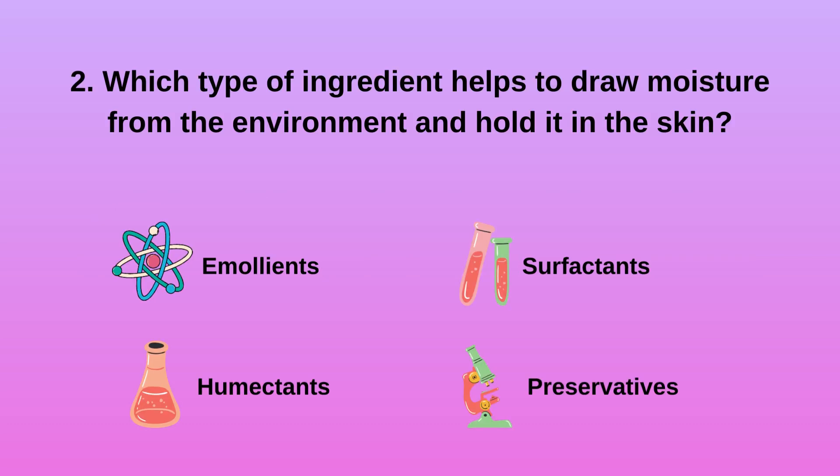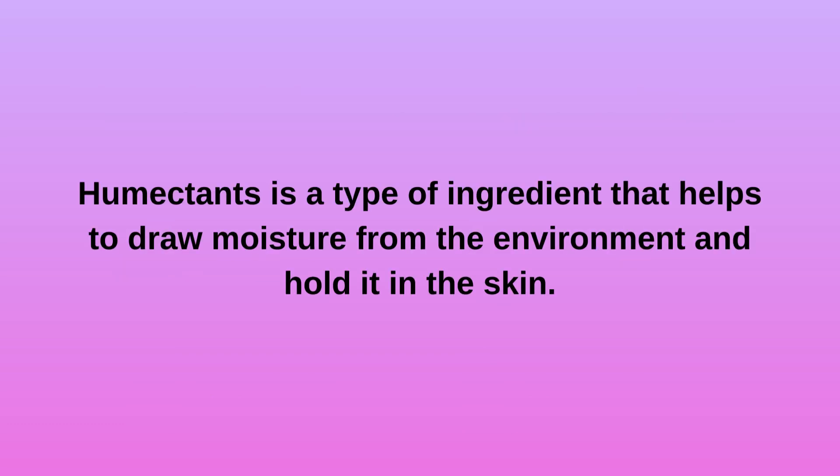2. Which type of ingredient helps to draw moisture from the environment and hold it in the skin? A. Emollients. B. Humectants. C. Surfactants. D. Preservatives. Humectants is a type of ingredient that helps to draw moisture from the environment and hold it in the skin.